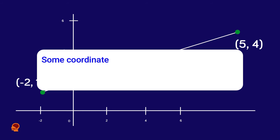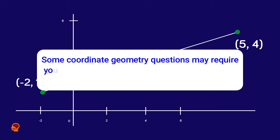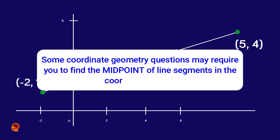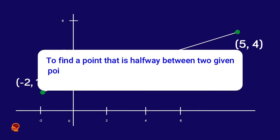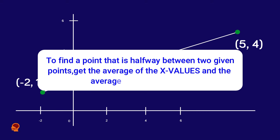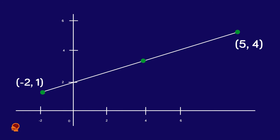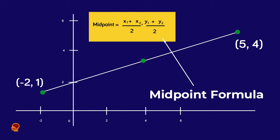Some coordinate geometry questions may require you to find the midpoint of line segments in the coordinate plane. To find a point that is halfway between two given points, you should always get the average of the x values and the average of the y values. Now let's take a look at this diagram, which shows the midpoint formula.